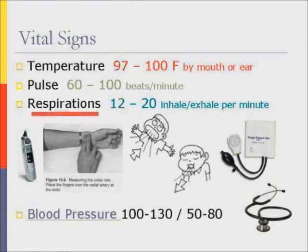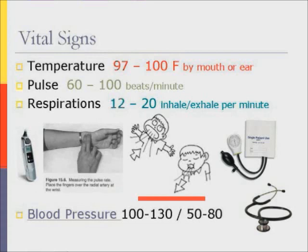Respiratory rate. Observe the patient's stomach or chest and watch until you see it rise and fall. Count the number of times the stomach or chest rises for 15 seconds and multiply by 4, or for 30 seconds and multiply by 2. This tells you the respiratory rate per minute. A normal respiratory rate at rest is 20 to 40 breaths per minute depending on your age.